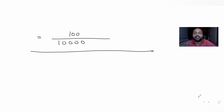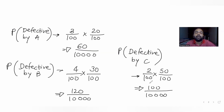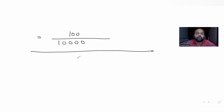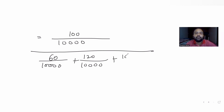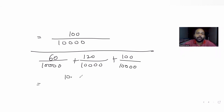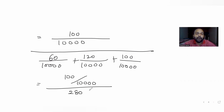The total — the denominator — is the sum of all defective products from machines A, B, and C: 60/10,000 plus 120/10,000 plus 100/10,000. The 10,000 is common, giving us 60 + 120 + 100 = 280, so the denominator is 280/10,000.